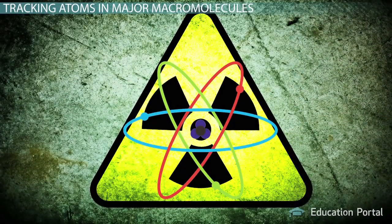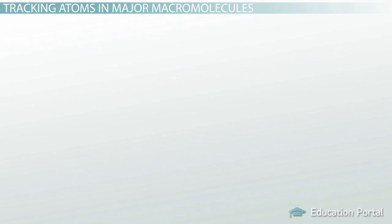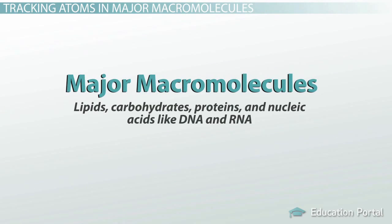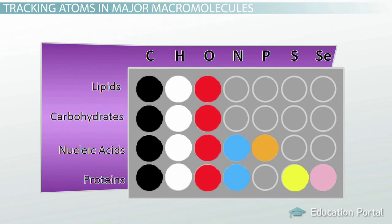Let's use radioactive isotopes to see how this works and to learn something about the major macromolecules in the cell. Remember that the major macromolecules are things like lipids, carbohydrates, proteins, and nucleic acids like DNA and RNA. The macromolecules are made up of building blocks that contain certain elements, as this table illustrates.